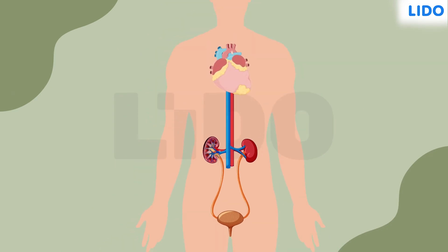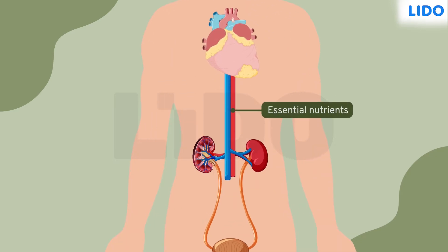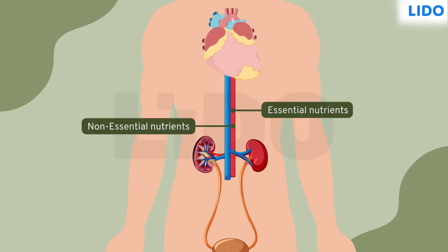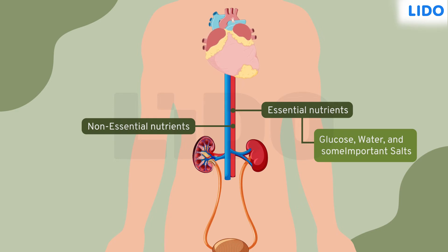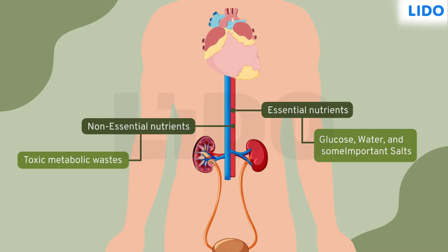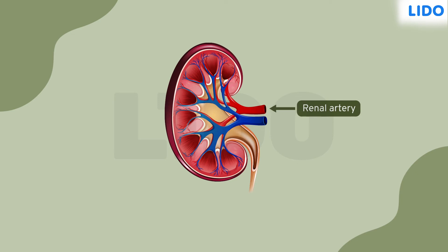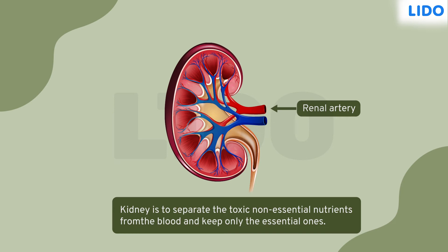The blood that is sent out from the heart contains both the essential nutrients and the non-essential nutrients. Essential nutrients include glucose, water, and some important salts, whereas non-essential nutrients may comprise toxic metabolic wastes. The blood enters the kidney through the renal artery. The main function of the kidney is to separate the toxic, non-essential nutrients from the blood and keep only the essential ones.